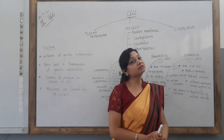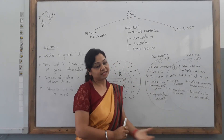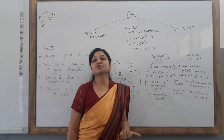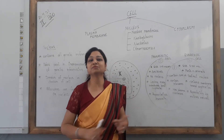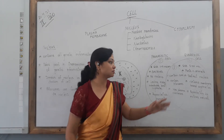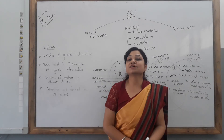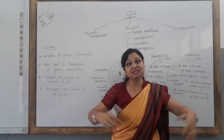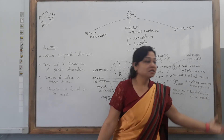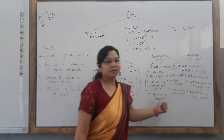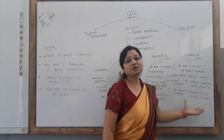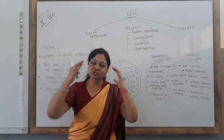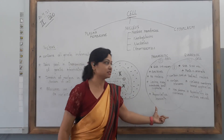Again, relating to real life: in the 19th century, reproduction was simple — just male-female reproduction. But these days we have IVF technology, test tube babies, surrogacy, and many other methods. This is how you can relate things with real-life examples to keep in mind the differences between prokaryotes and eukaryotes.